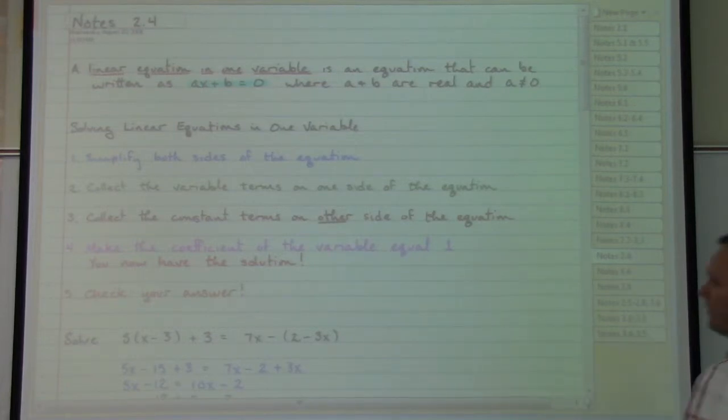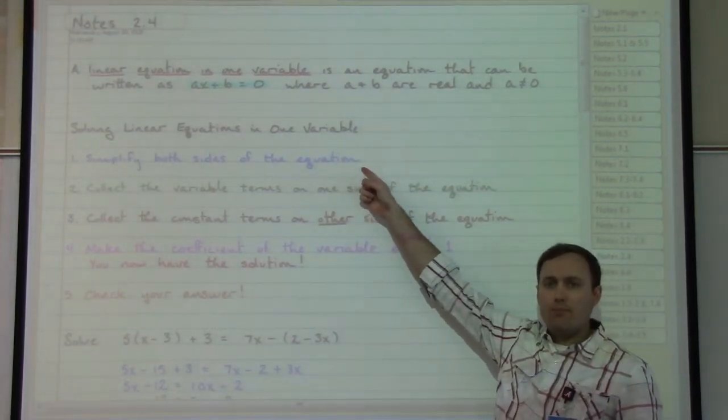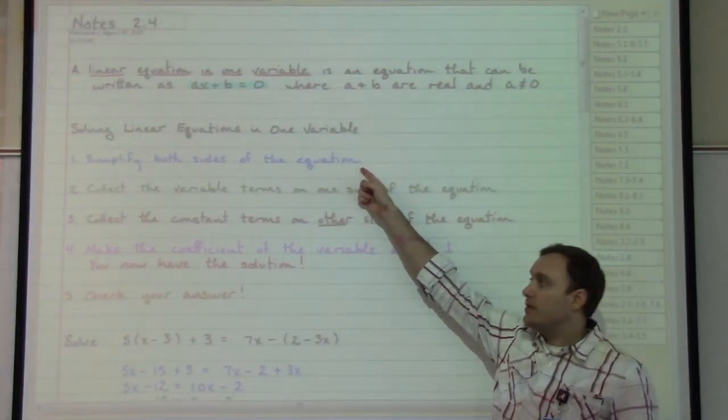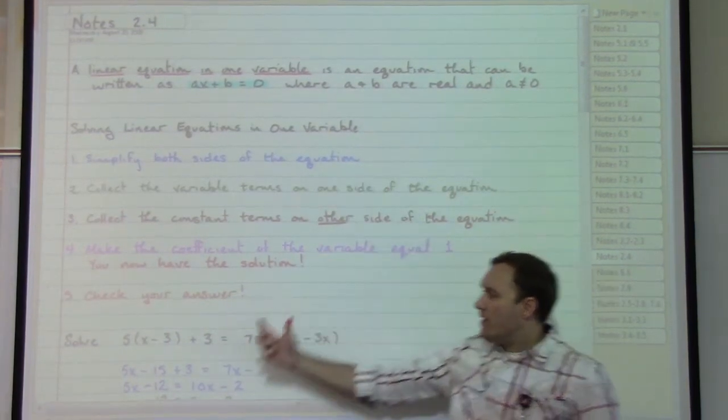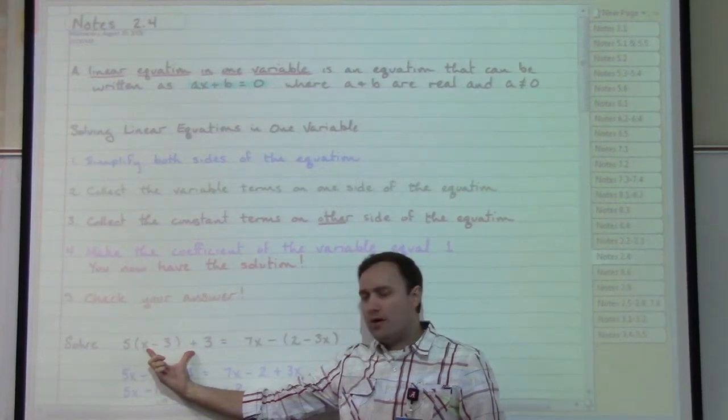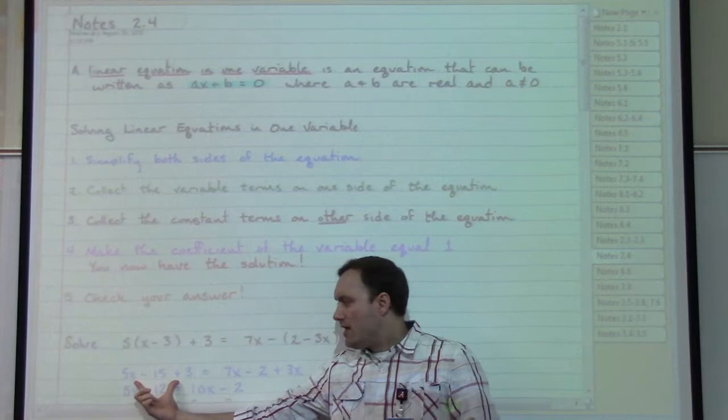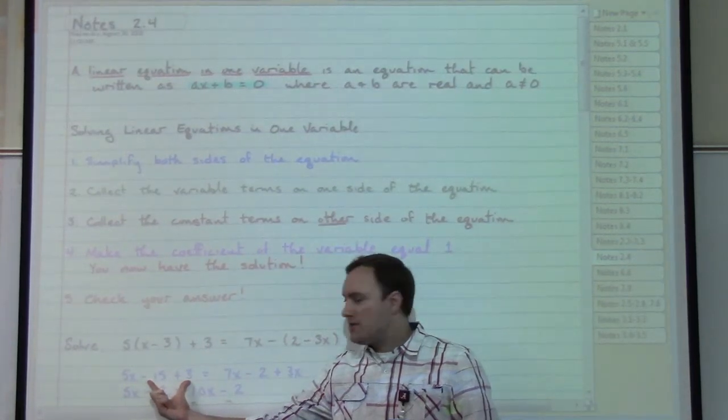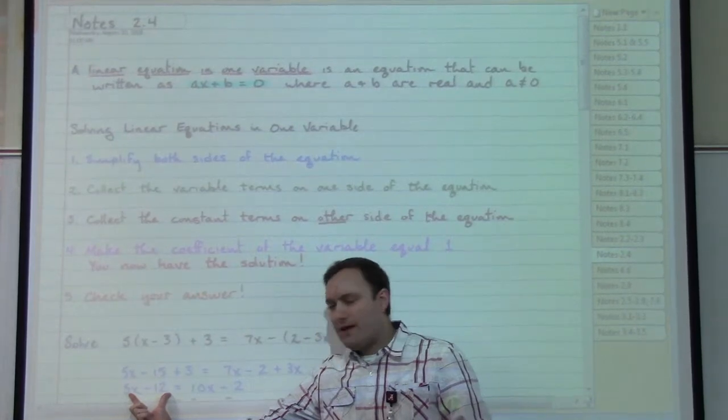We want to start by looking at each side of the equation as though it was its own separate expression to simplify. Looking at just the left hand side of my equation here, I want to distribute the 5 so I can clear out my parentheses. Then I can combine like terms, negative 15 and a plus 3, in order to get 5x minus 12.